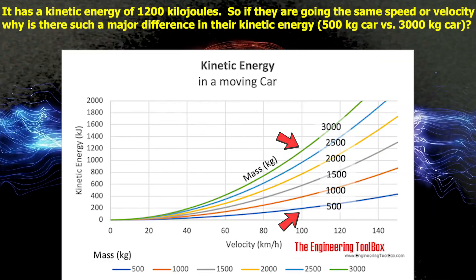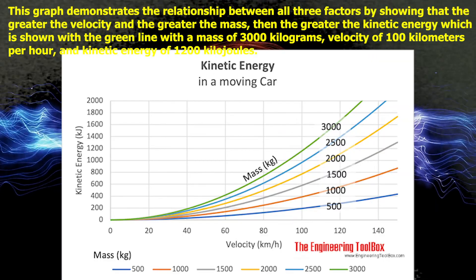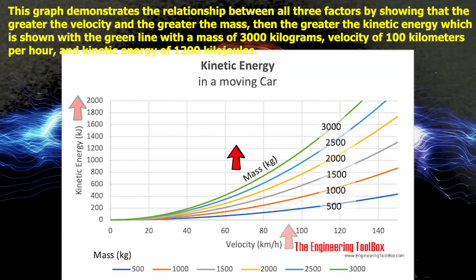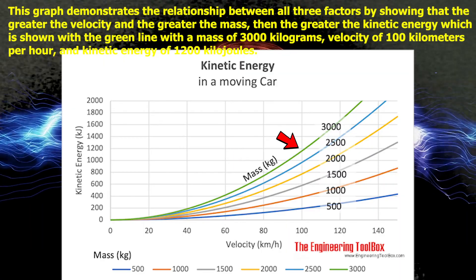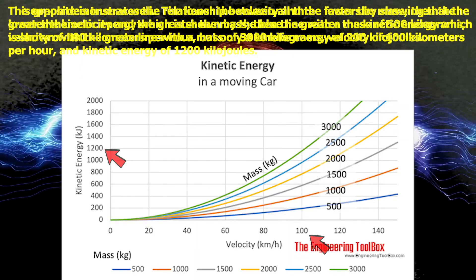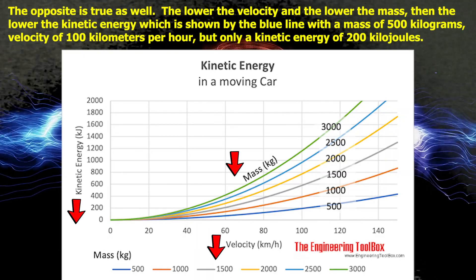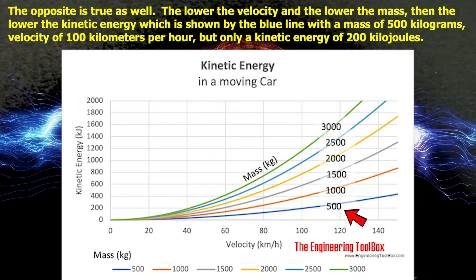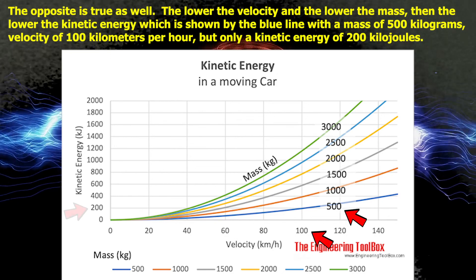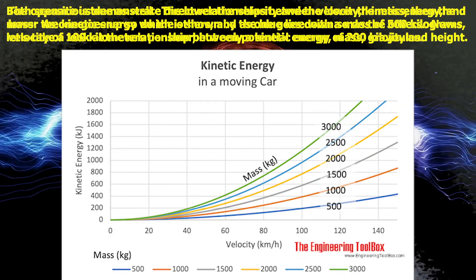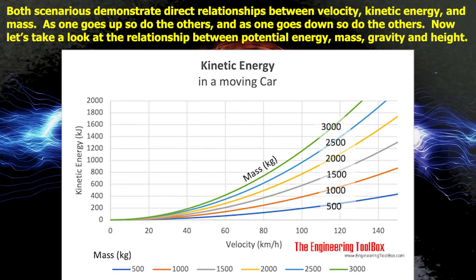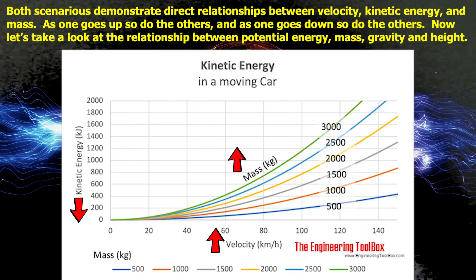So if they are going the same speed or velocity, why is there such a major difference in their kinetic energy? This graph demonstrates the relationship between all three factors by showing that the greater the velocity and the greater the mass, then the greater the kinetic energy — shown with the green line at a mass of 3,000 kilograms, velocity of 100 kilometers per hour, and kinetic energy of 1,200 kilojoules. The opposite is also true: the lower the velocity and the lower the mass, then the lower the kinetic energy — shown by the blue line with a mass of 500 kilograms and only 200 kilojoules. Both scenarios demonstrate direct relationships between velocity, kinetic energy, and mass.